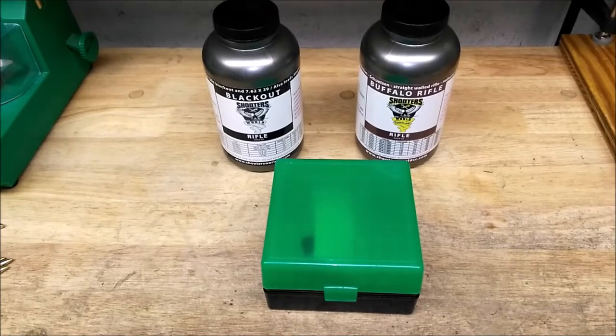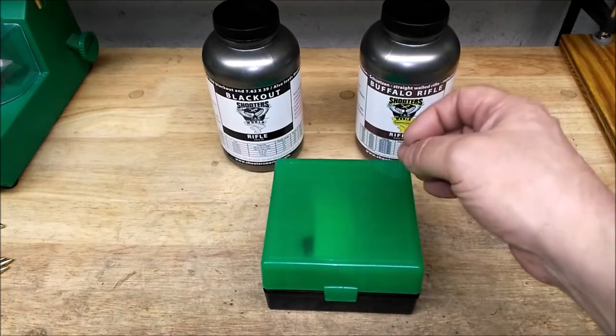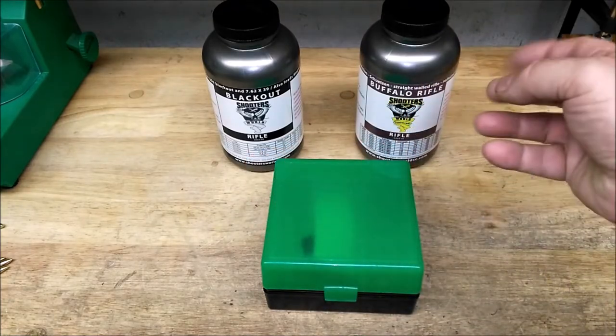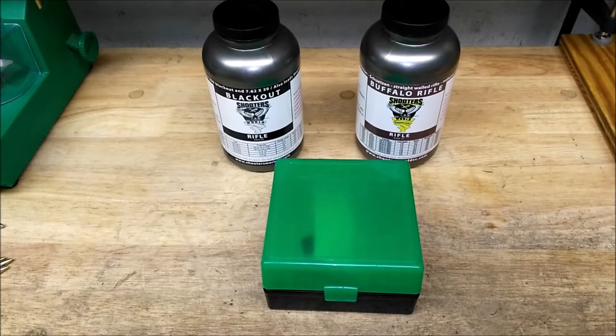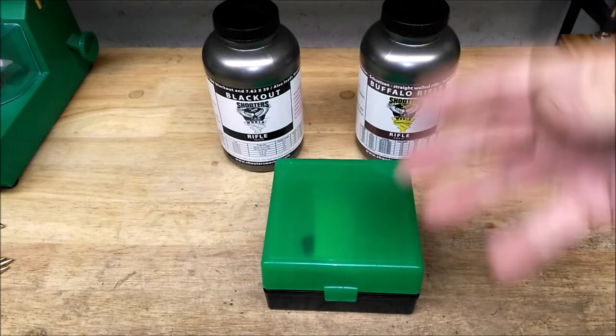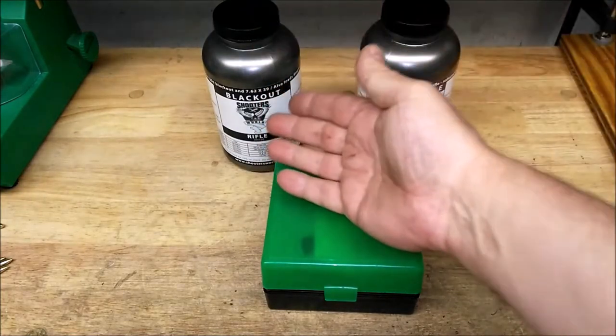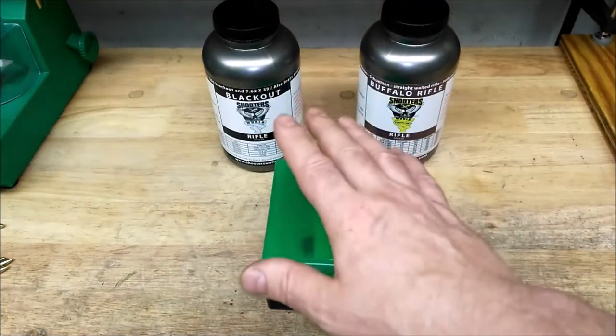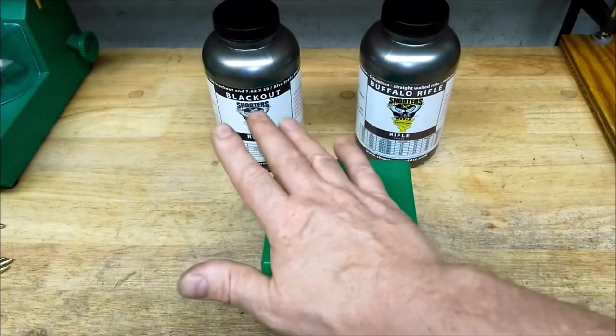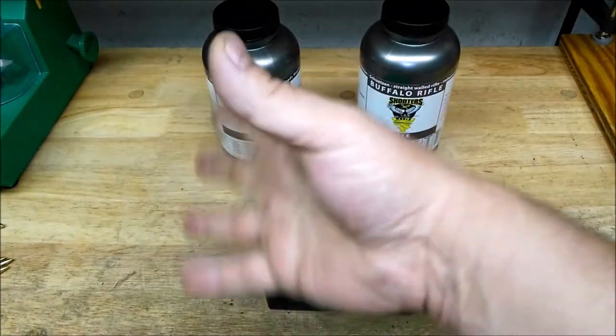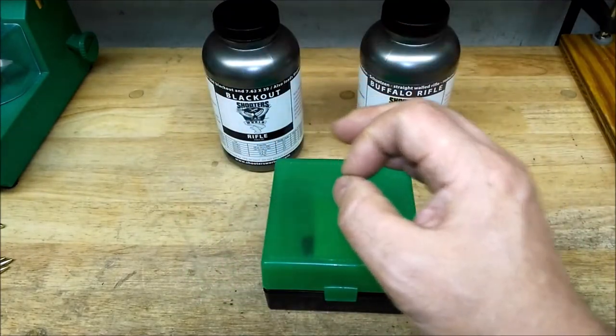All right, so I decided to try Blackout and Buffalo Rifle from Shooter's World in .223. Now, Blackout is a D063 in Lovex, and they show .223 data where Shooter's World doesn't.